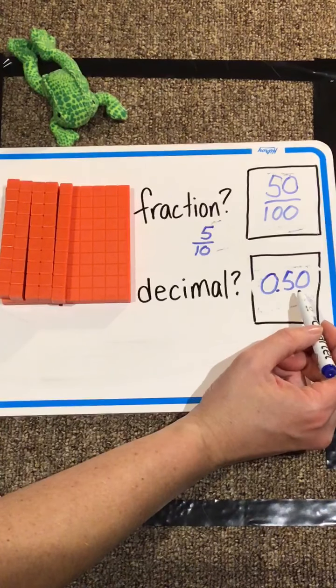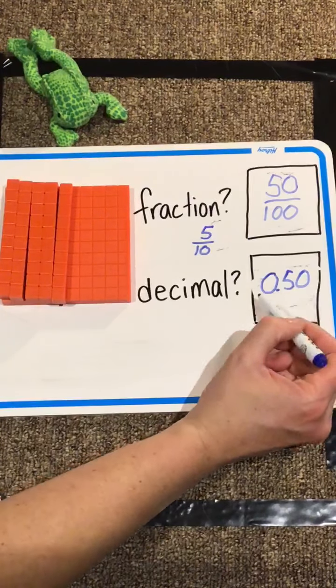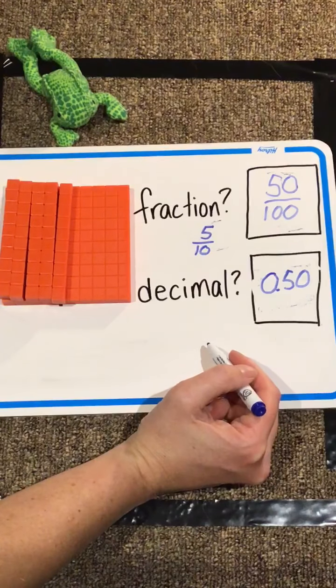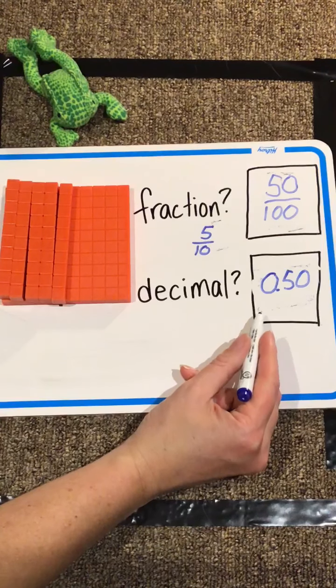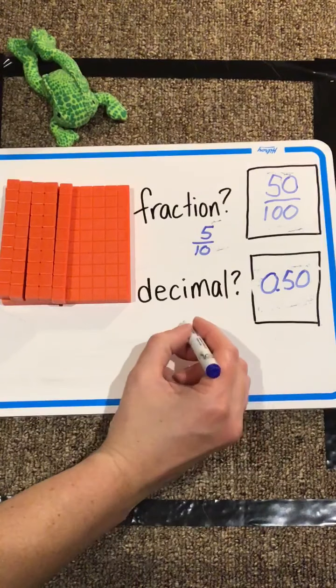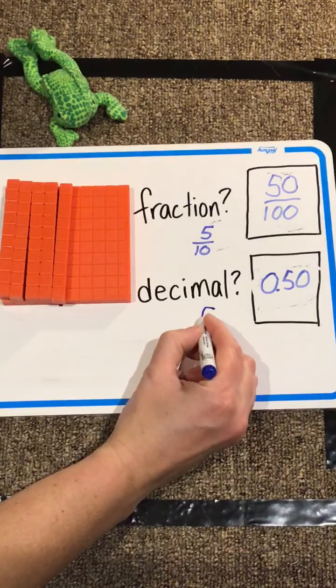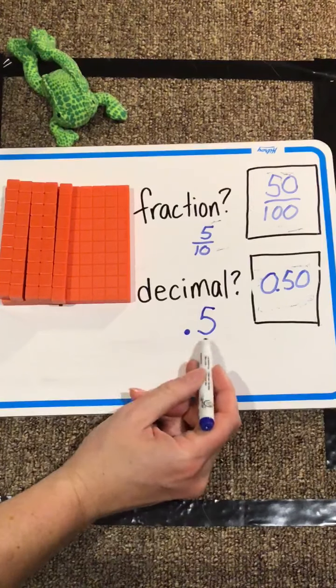Now you might be thinking, hey wait a second, do we really need all of those zeros? And the answer is, no way! If you're a lazy mathematician, you don't need to write all those extra zeros. You could also represent this number just like that, .5.